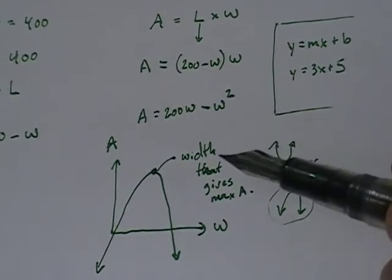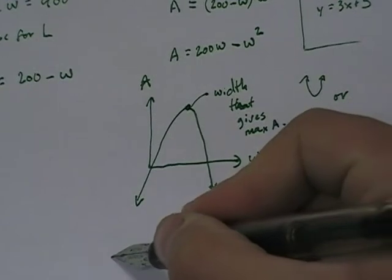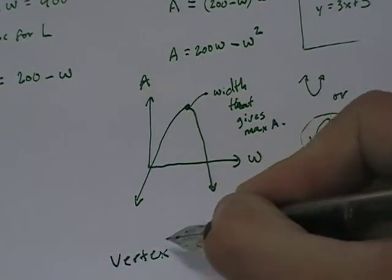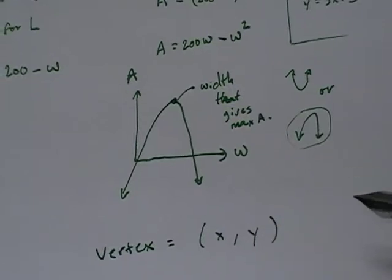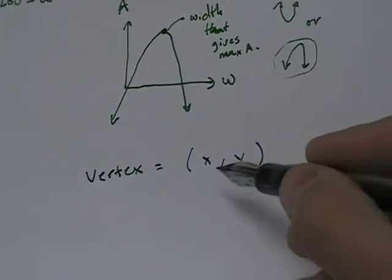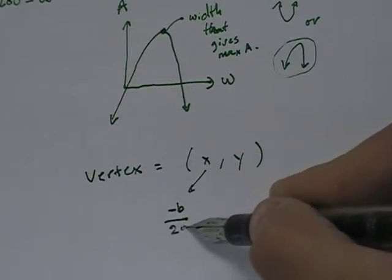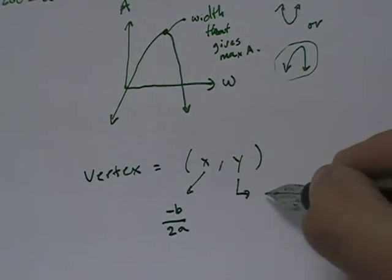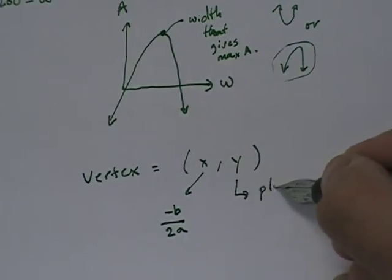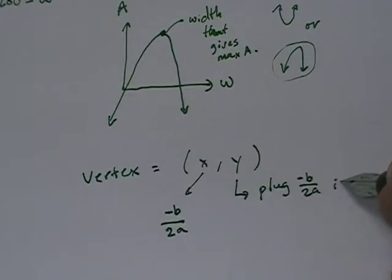Well, this point is the vertex of this equation. And the vertex of any parabola is going to be an xy coordinate, where x is negative b over 2a and y is obtained by plugging negative b over 2a into the original equation.